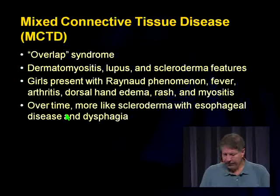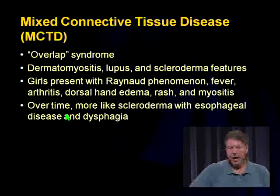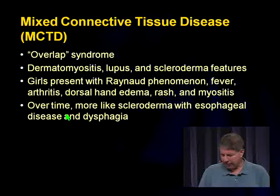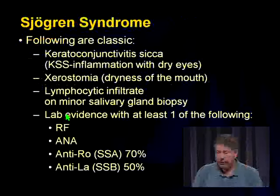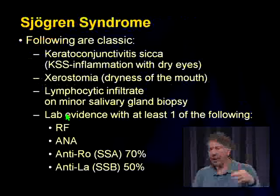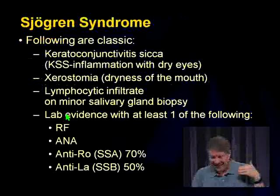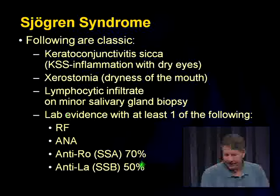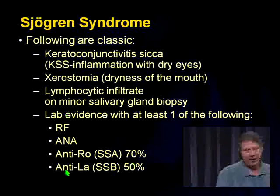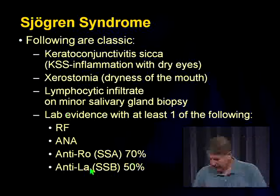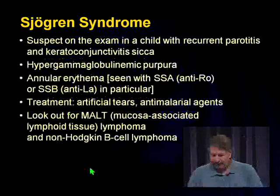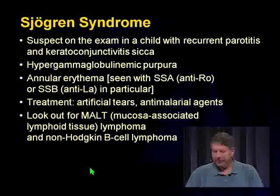Mixed connective tissue disease — know it as a distractor. Sjogren's syndrome: the main thing is dry eyes and dry mouth. Look for anti-Ro and anti-La antibodies. On the test, look for a kid with recurrent parotid swelling who complains of dry eyes and dry mouth.